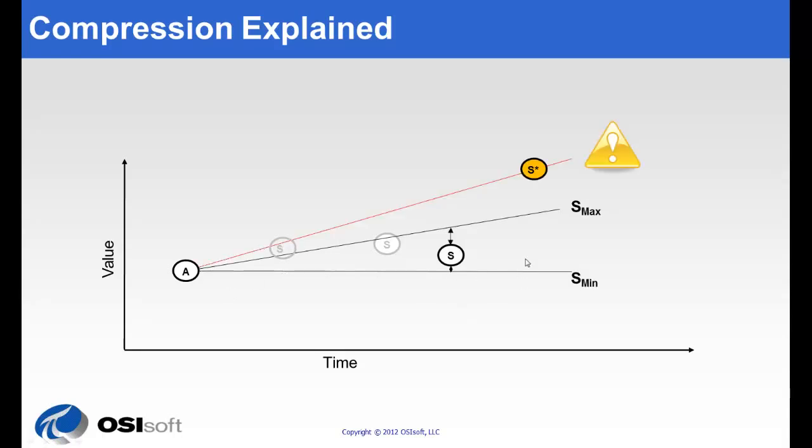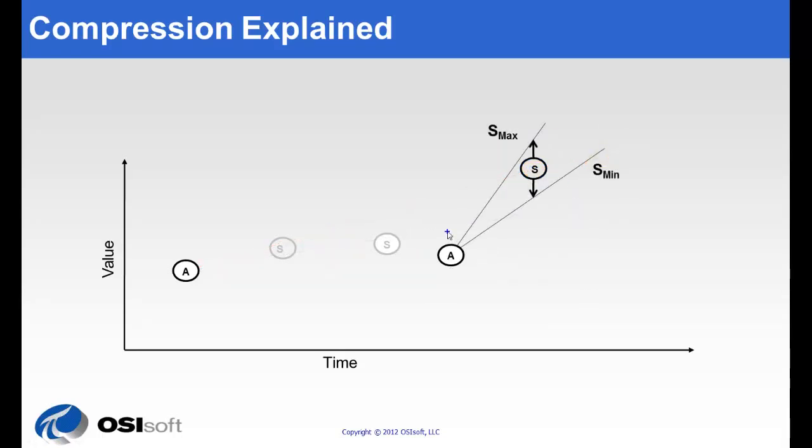When our next snapshot value comes in, we see that it's outside of our acceptable angle here. This means that we're going to keep this value, and this one will become the new snapshot value. We define a new archive value that will be written to the PI archives, and we start the whole process over again. We can also see that between any two archive values, the compression deviation defines a parallelogram that holds any data that happened in between those two archives.